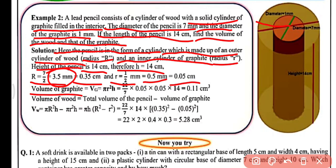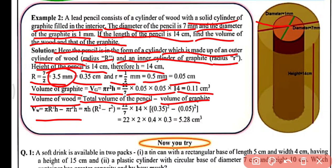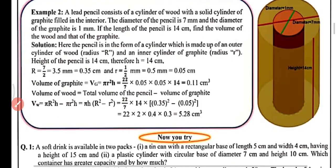The volume of graphite is πr²h = (22/7) × 0.05 × 0.05 × 14 = 0.11 cm³. The volume of wood equals the total volume of the pencil minus the volume of graphite, that is πR²h − πr²h, which after simplifying gives 5.28 cm³. This is all about example number 2.